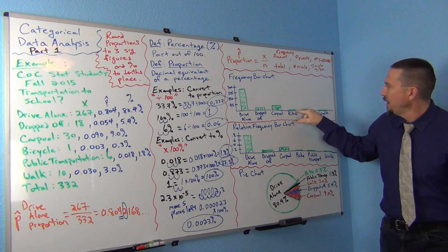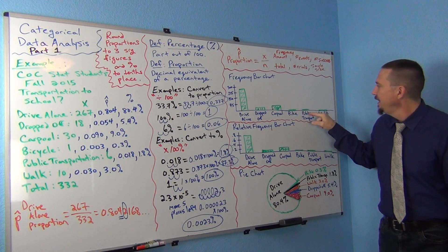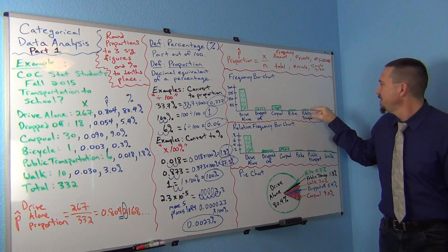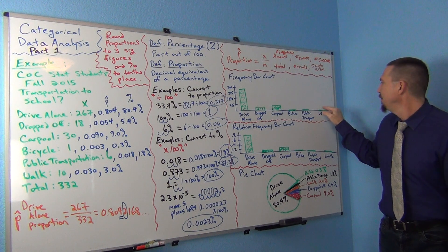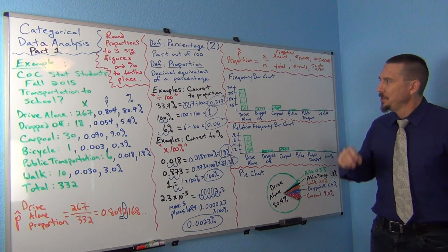The biking is barely off. It's only one. Public transportation was only six. And walking was only ten. So those are really, really small.